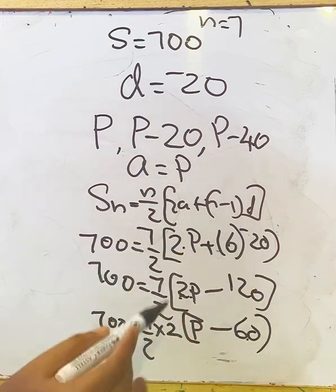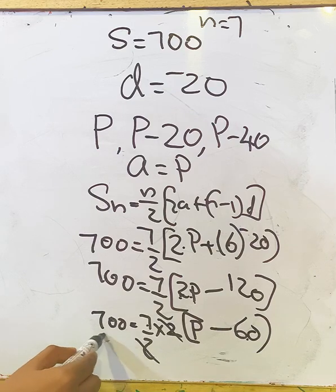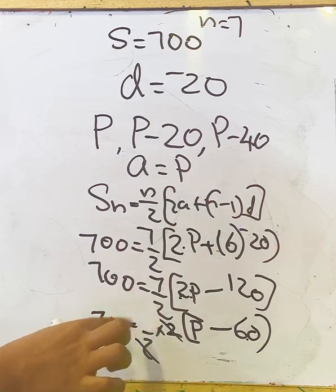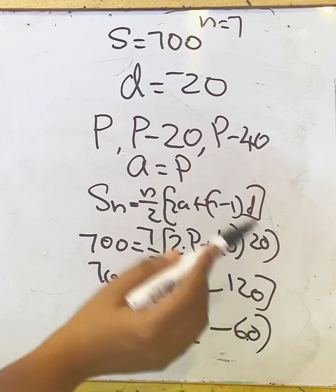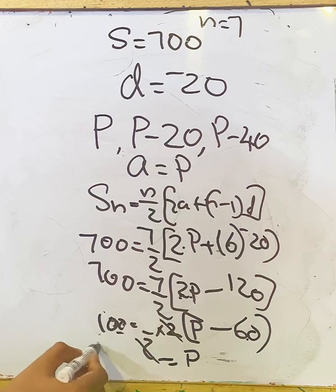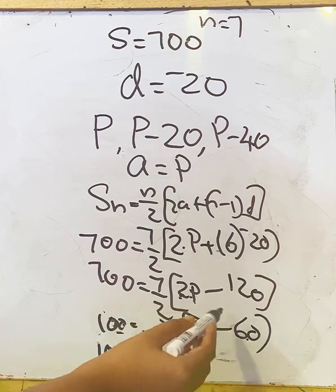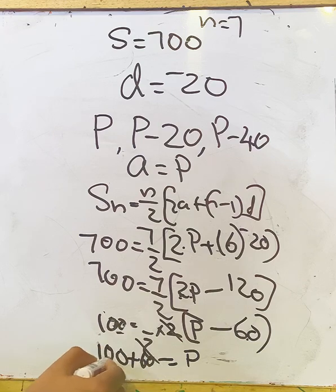This 7 we can take to the side; it goes to the denominator. 700/7, we will get 100. So 100 = P - 60. That is, P = 100 + 60, which gives P = 160.